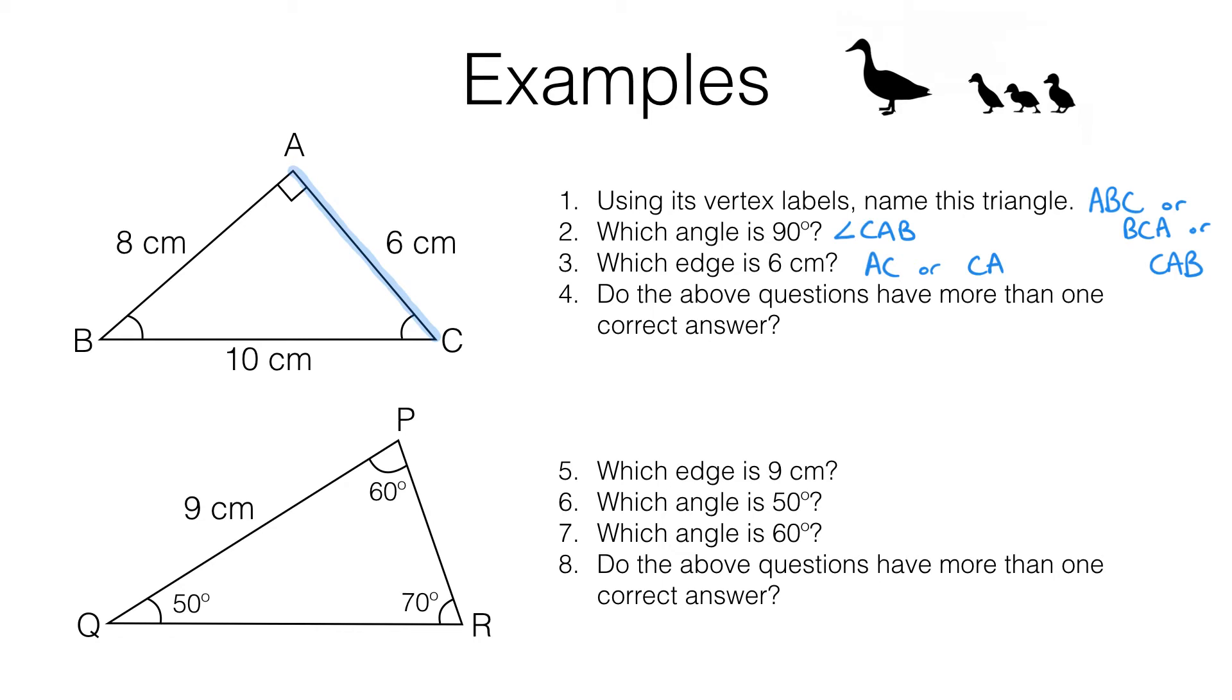Moving on to question four. Do the above questions have more than one answer? Well, we've seen question one has three correct answers. We could call it ABC, BCA or CAB. Now, some people might argue that there are three more. Why can't we also have ACB, BAC and CBA? In other words, going clockwise around the shape. And some people will argue that you can, but convention means that we normally do these anti-clockwise.